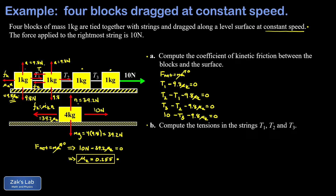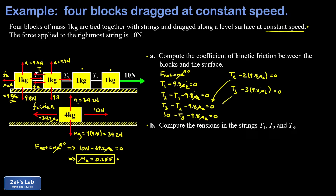We're conveniently set up to use elimination. Adding the first two equations cancels T1, generating an equation with T2 and minus 2 times 9.8μk. Substituting that into the third equation cancels T2, leaving T3 and minus 3 times 9.8μk equal to zero. Substituting into the fourth equation cancels T3, giving 10 minus 4 times 9.8μk equals zero. Solving gives exactly the same answer as the shortcut: μk equals 0.255.